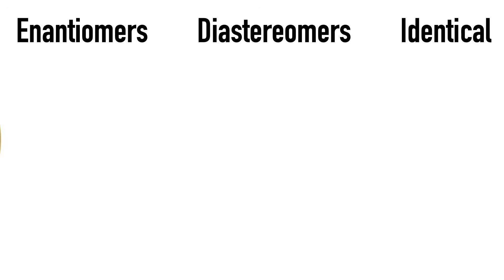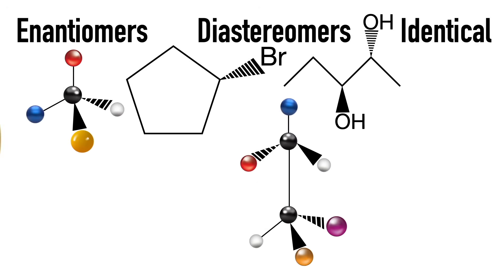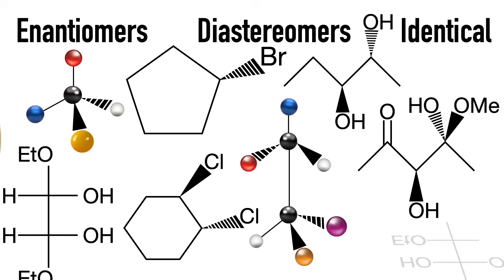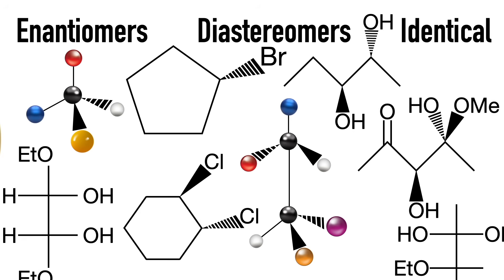Questions asking whether two molecules are enantiomers, diastereomers, or identical are some of the most high-yield and high-trouble types on tests. You've probably already dealt with a lot of these in your practice tests and are always surprised when you get them wrong. Well, after watching this video — in which I'll show you a trick to make these super quick and easy and help you not fall into traps — you'll always be surprised that you keep getting them correct.